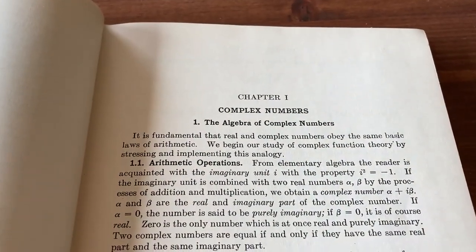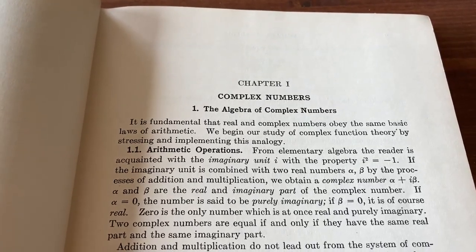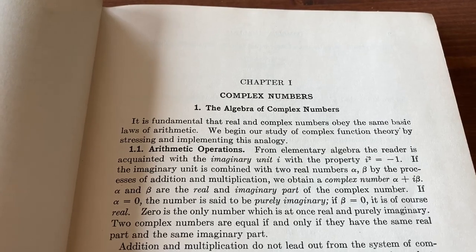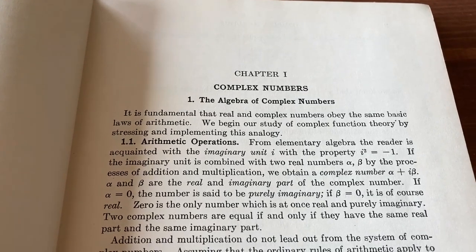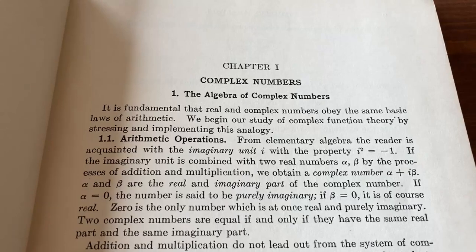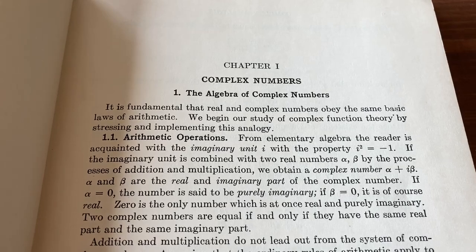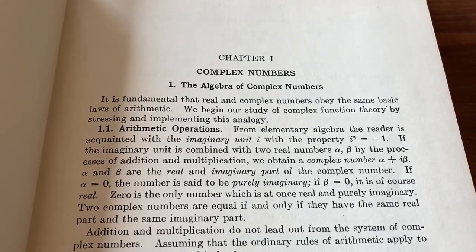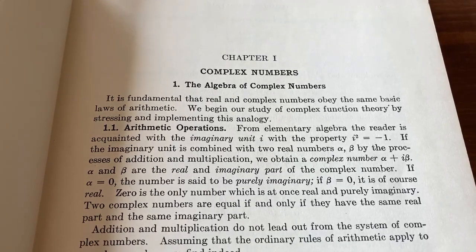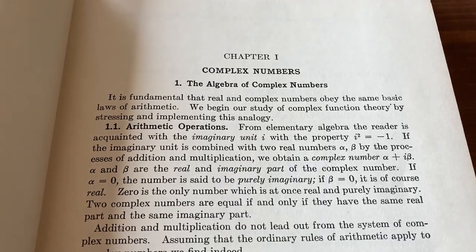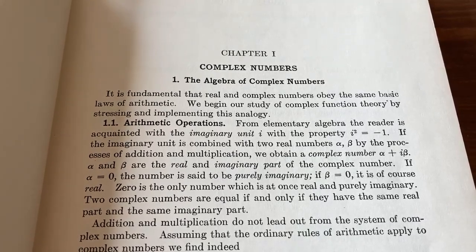This is chapter one on complex numbers, the algebra of complex numbers. It is fundamental that real and complex numbers obey the same basic laws of arithmetic. We begin our study of complex function theory by stressing and implementing this analogy. It talks about arithmetic operations. From elementary algebra, the reader is acquainted with the imaginary unit i, the property that i squared equals negative one. And then it goes on and talks about a complex number. If the imaginary unit is combined with two real numbers, alpha and beta, by the process of addition and multiplication, we obtain a complex number, alpha plus i beta.